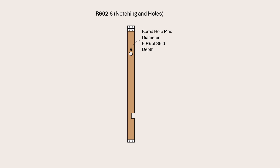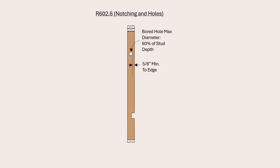Just like with bearing walls, the distance from the edge of a hole to the edge of the non-bearing stud should not be less than 5/8 of an inch. Additionally, bored holes shall not be located in the same cross-section with a cut or a notch in the stud. Finally, for non-bearing partitions, notches are limited to a maximum depth equal to 40% of the depth of the stud.